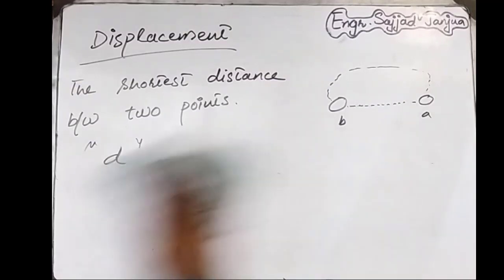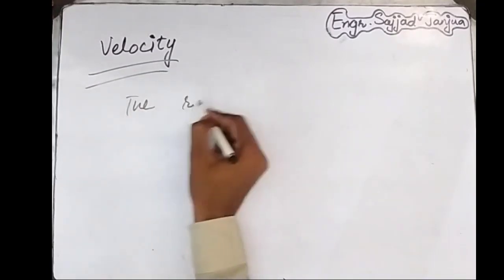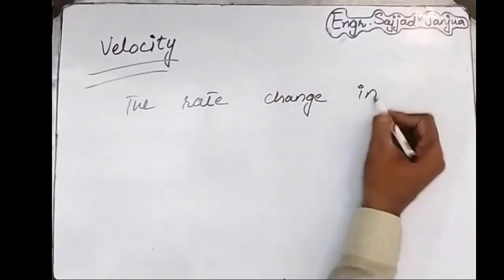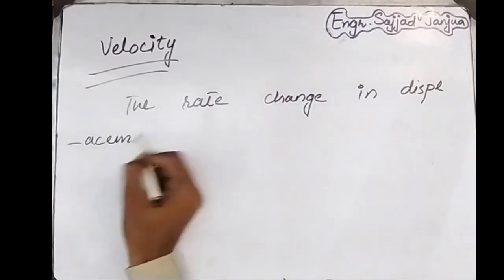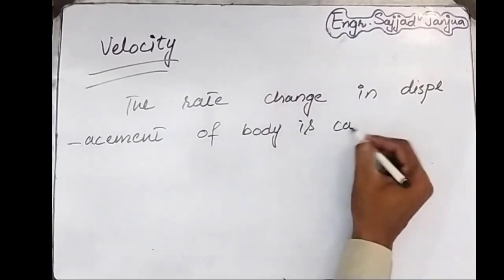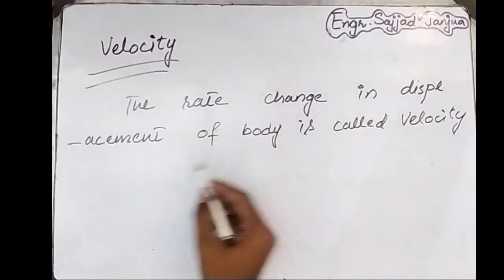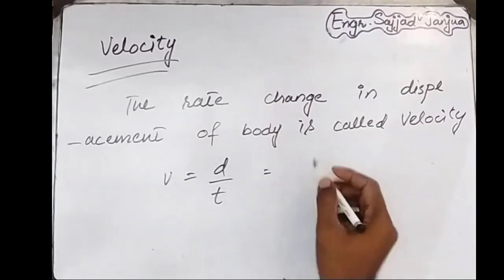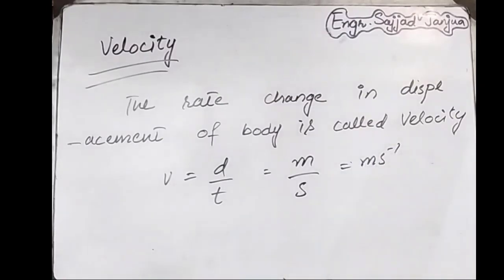Now we will discuss velocity. The rate of change in displacement of a body is called velocity. Velocity is equal to displacement d divided by time t. We have displacement in meters and time in seconds, so velocity will be equal to meter per second. It is a vector quantity.